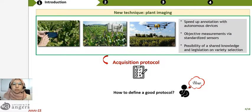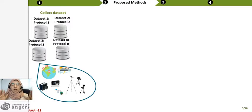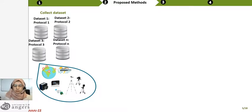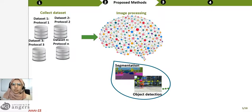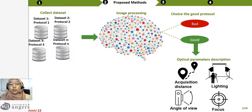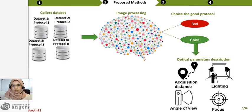So, the question here is how to define a good protocol of acquisition. We try to respond to this question. We have different databases from different countries, taken with different devices. After that, we apply image processing tasks to this database: segmentation and object detection. And now, we want to choose the best protocols, dividing our images into good or bad based on the results.